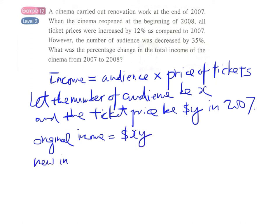The new income in 2008 will be x times (1 minus 35 percent) multiplied by y times (1 plus 12 percent), since the audience dropped by 35 percent and ticket price increased by 12 percent.